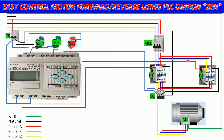If I push start forward, it will show here 'Running Forward.' If I push stop, it will not show. If I push start reverse, it will show 'Running Reverse.' And if the motor overloads, it will show 'Motor Overload' here.